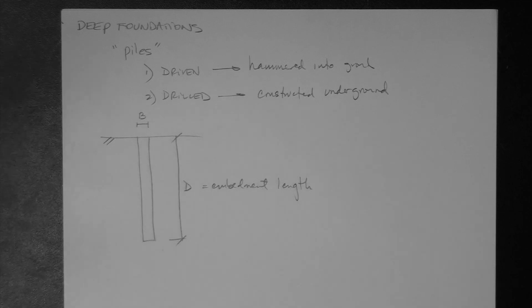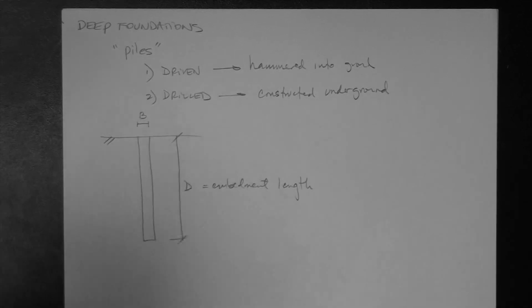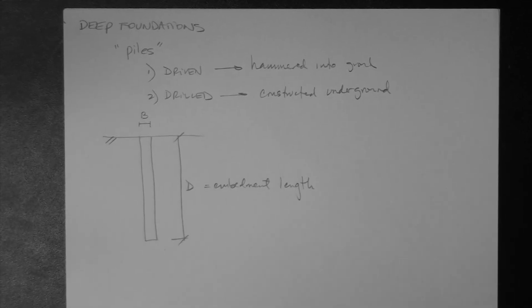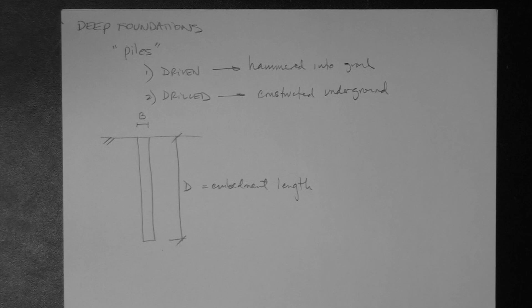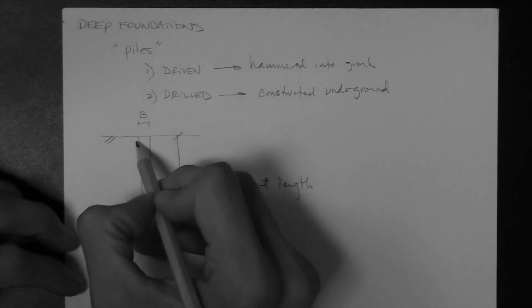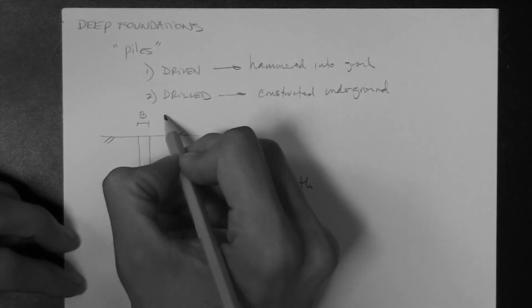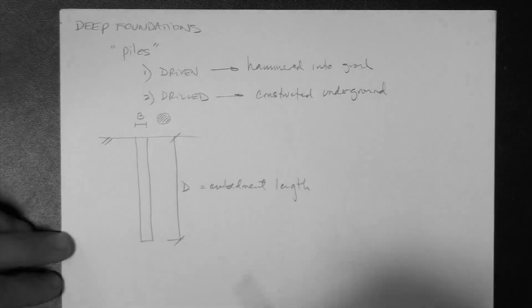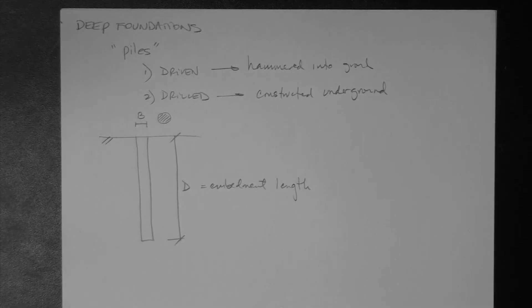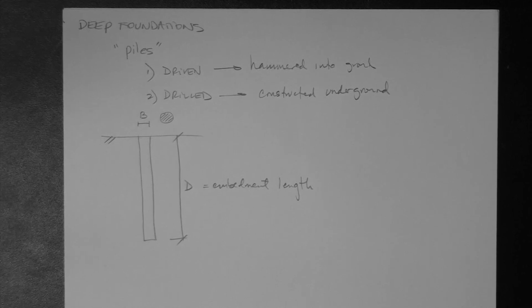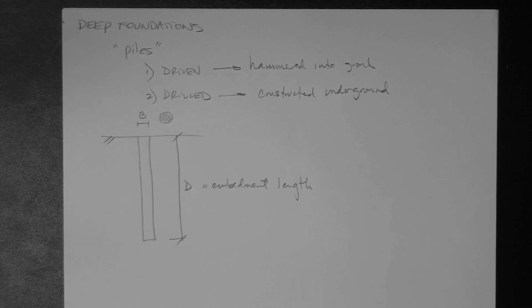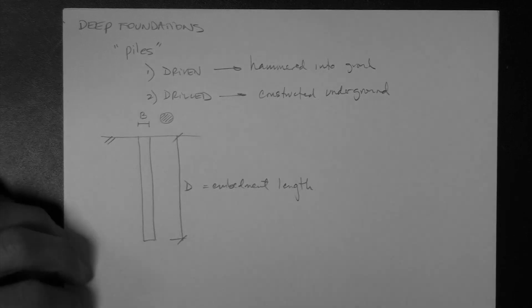Generally, I would say most piles are circular in cross-section. So, this right here, if you were to look at it from the top, it would be something like that, and the diameter is B. But you could have piles that have different cross-sectional shapes. It could be a square pile, or even maybe an octagonal pile.